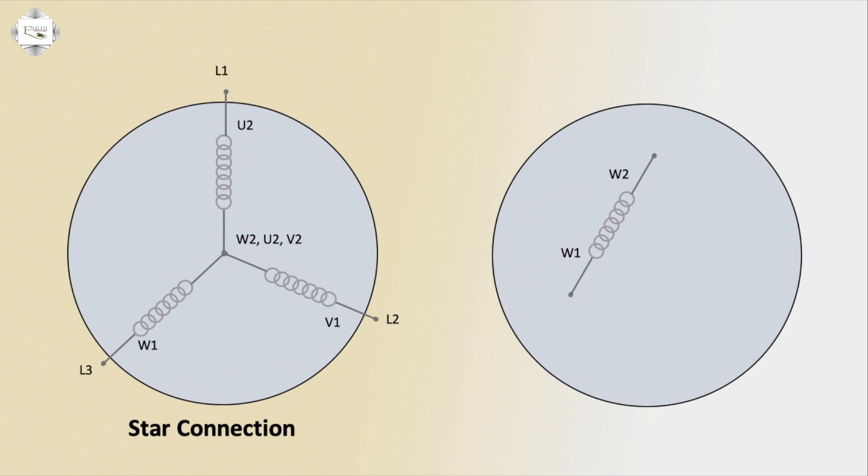Another delta connection arrangement: Coil 1 is W1-W2, coil 2 is U1-U2, third coil is V1-V2, forming the delta connection.